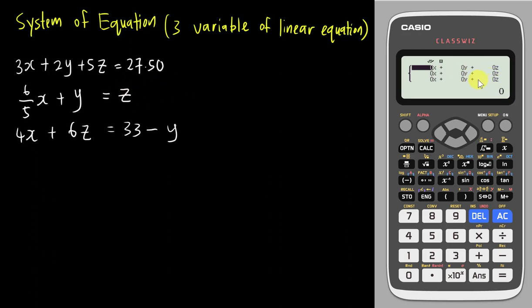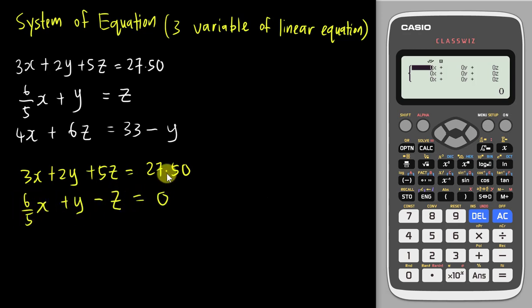Therefore I need to rearrange the second equation to make it look like the pattern in the calculator. Same idea for the third equation. So I will just rearrange everything. The first one I basically already arranged, so I can just copy it. For the second one is 6/5x plus y minus z equals to zero, because I must equal to the number, the constant number. Then the last one will be 4x plus—I will go to the y first before the z—plus y but negative y moved to the other side becomes positive y, and then plus z will equal to 33.